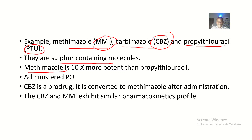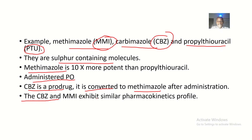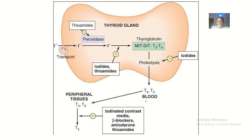Methimazole is 10 times more potent than propylthiouracil and is administered via the oral route (PO). Carbamazole (CBZ) is a prodrug — a precursor — that converts to methimazole after administration. Carbamazole and methimazole exhibit similar pharmacokinetic profiles, meaning the effect of the body on the drug is basically similar for both.